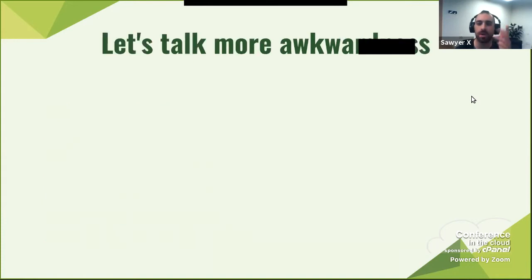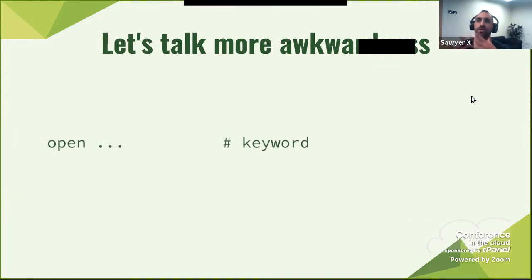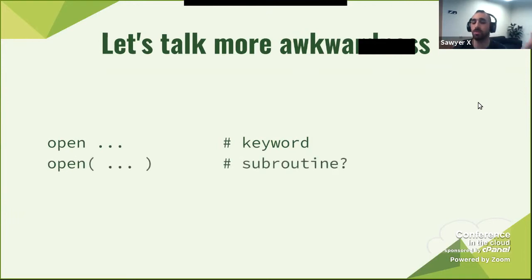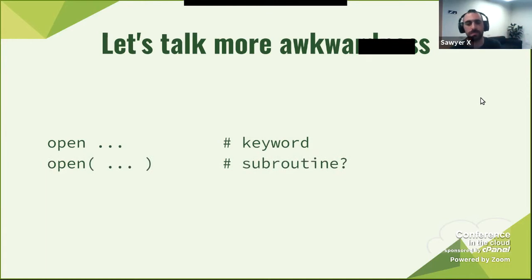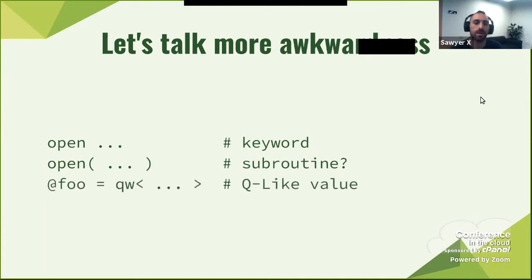Some more awkwardness: 'open' is a keyword, but if you were to write a parser and functions could have parentheses, then 'open' maybe could also be a subroutine if someone used parentheses with it — because you probably could use parentheses with keywords, but you could also omit them. And 'qw' is referred to as a q-like value — it's a type of value.